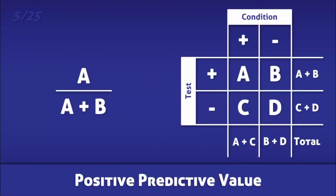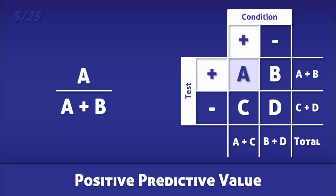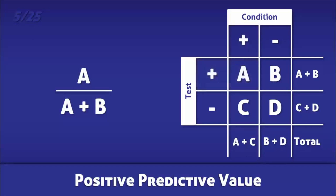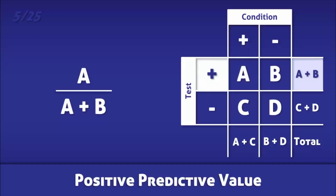The positive predictive value is the proportion of positive test results that correctly identify people with the condition. It is calculated by dividing the number of true positives by the total number of positive tests.